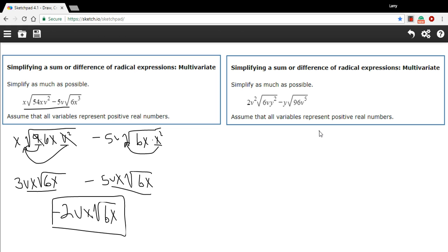Let's try another one like that. Okay, our first term here we've got 2v² times the square root of 6vy². So just looking at this I can't really do anything with the 6 or the v, but the y squared that comes out.